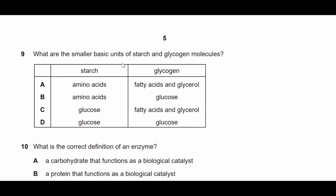Question nine: what are the smaller basic units of starch and glycogen molecules? Naturally, starch is made out of glucose, and glycogen is also made of glucose. Amino acids are for proteins, and fatty acids and glycerol are for triglycerides. The answer is glucose.